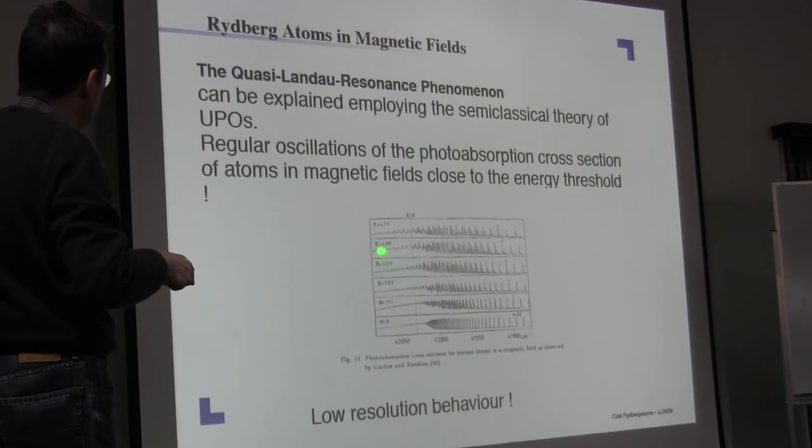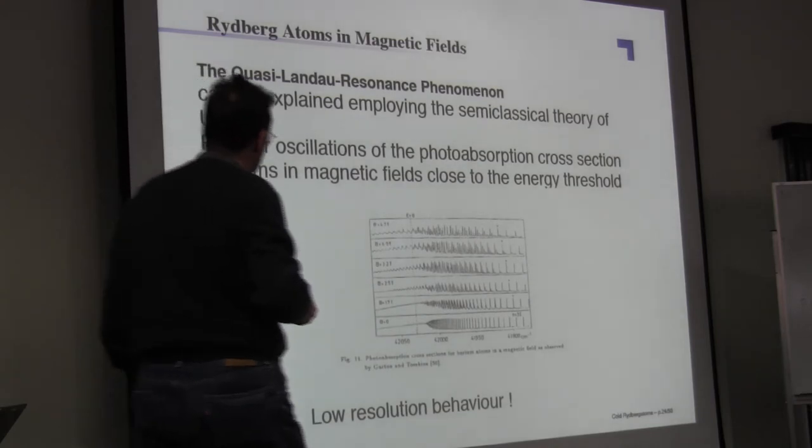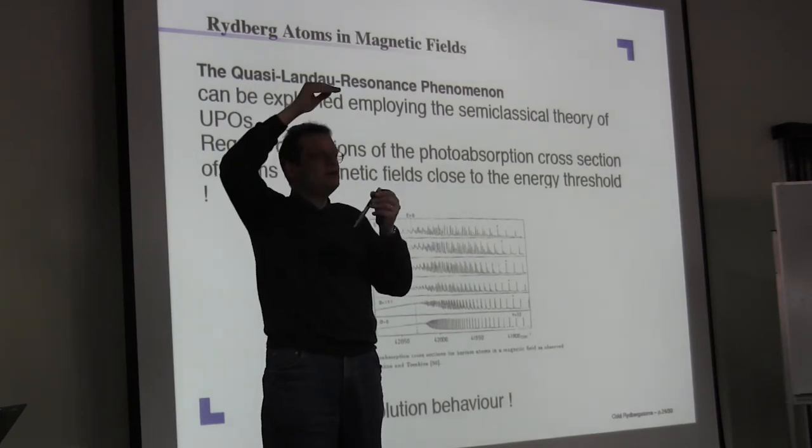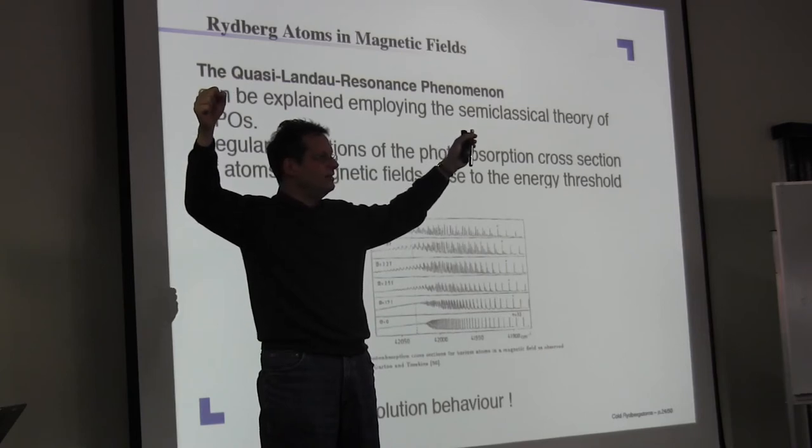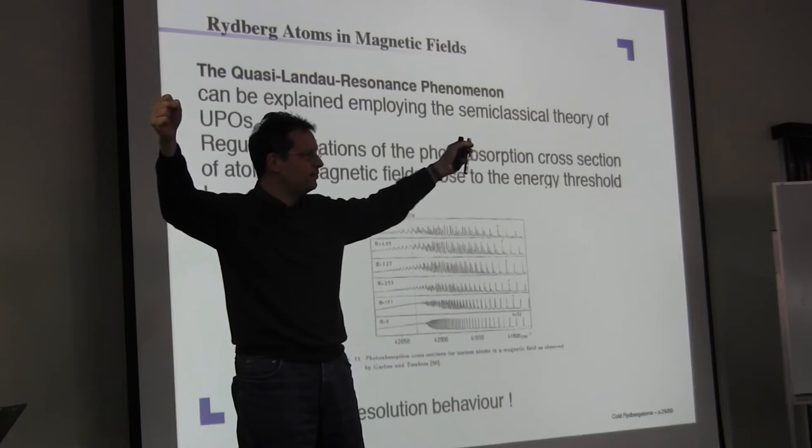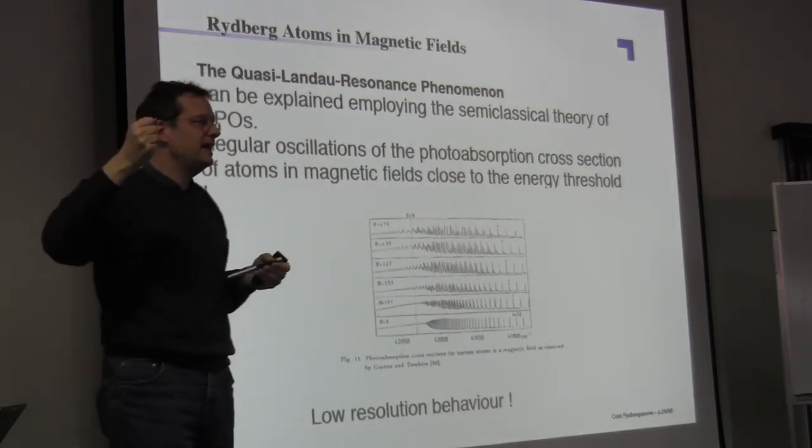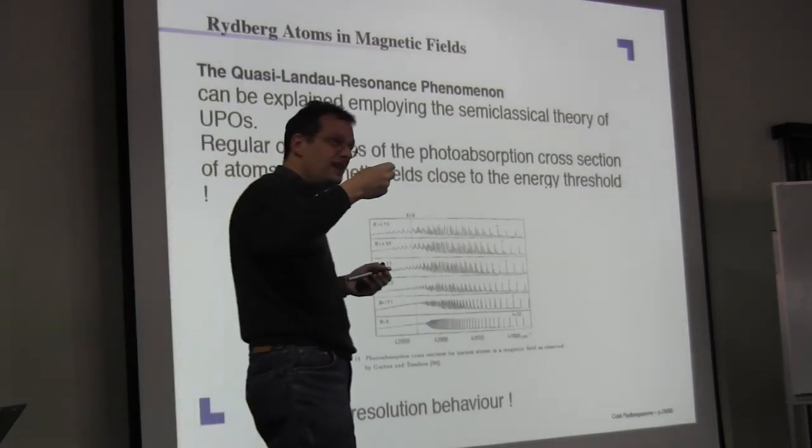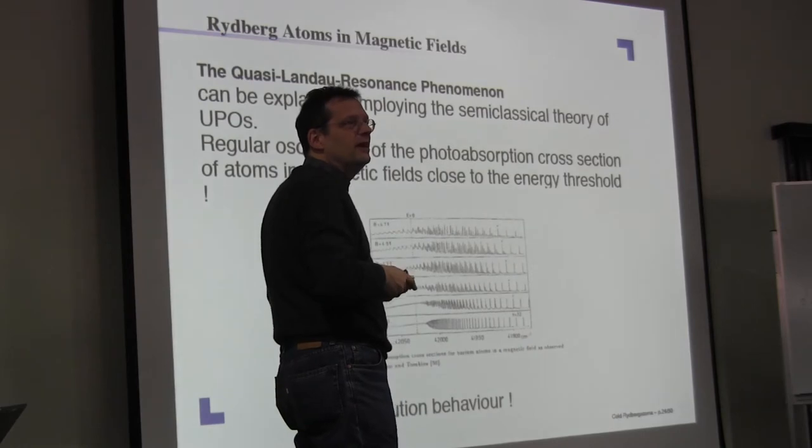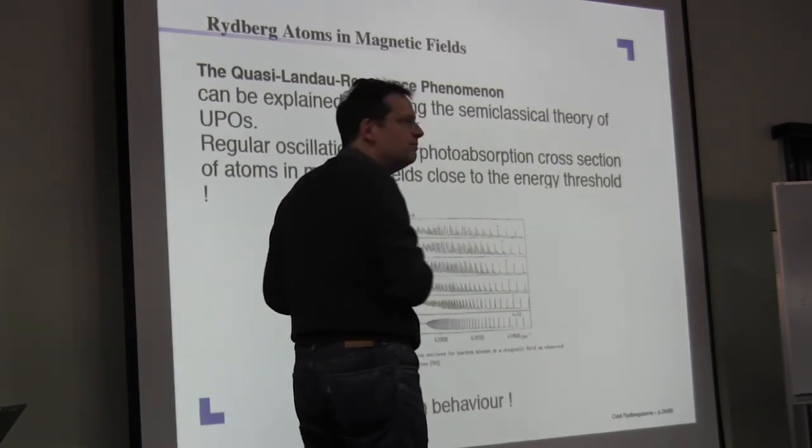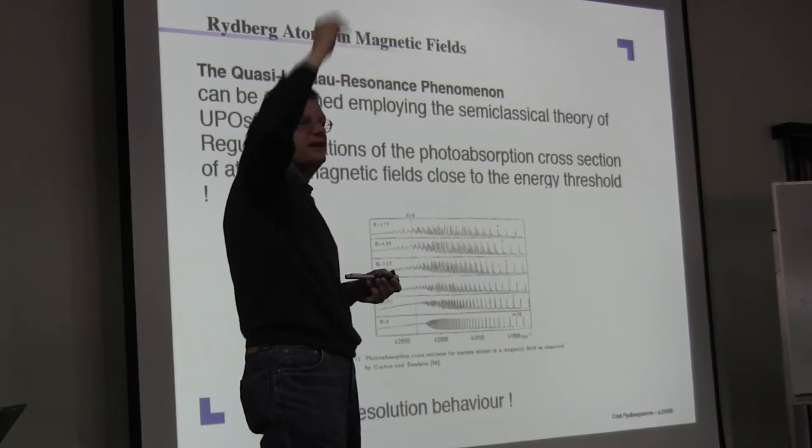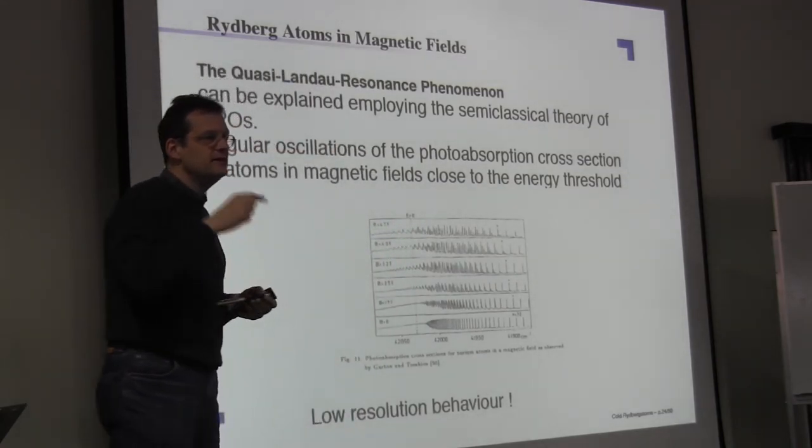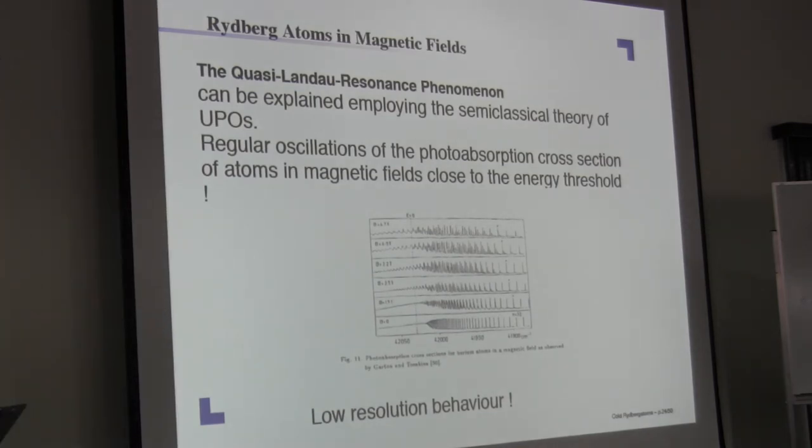And at the beginning people thought, well, these oscillations might be connected to the following fact. If I am at threshold with my electron, then my Coulomb interaction will be extremely weak. I am very far from the nucleus, and then I have a magnetic field only, and then I have the Landau orbits. And we know the Landau orbitals. Those are essentially oscillators, and oscillators have a principal quantum number n. And then people thought, well, maybe these oscillations are simply oscillations due to the different oscillator states in the magnetic field.